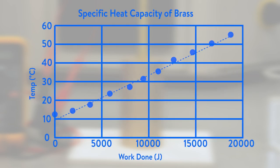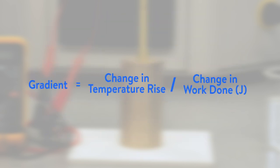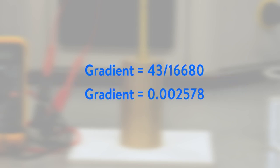Plot a graph of temperature degree c against work done joules and draw a line of best fit. Calculate the gradient of your graph. The gradient equals the change in temperature rise divided by the change in work done in joules. For the results we obtained, the gradient equals 43 over 16680, therefore giving you 0.002578.